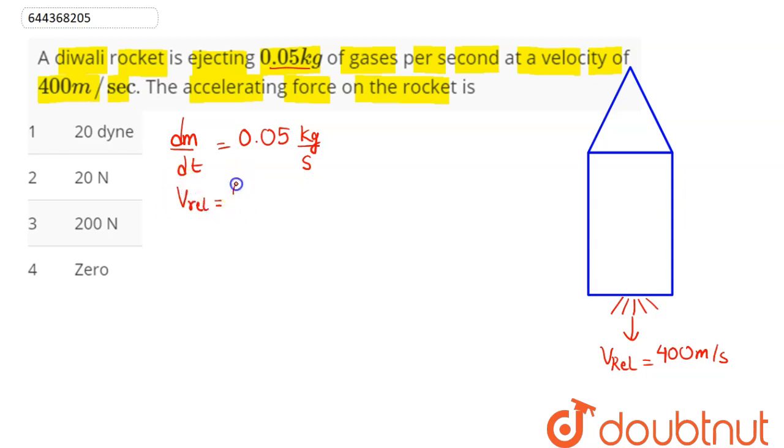So the thrust force acting on this rocket can be written as, when the gas ejects out of this rocket, the thrust force is given by the formula as F_T is equal to v_relative into dm/dt.